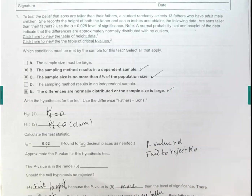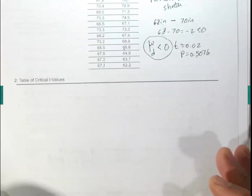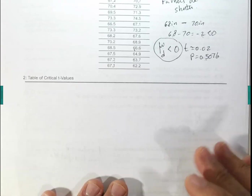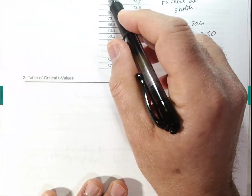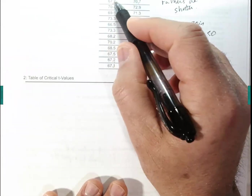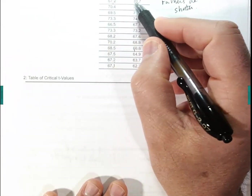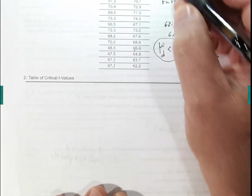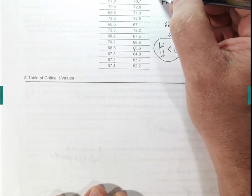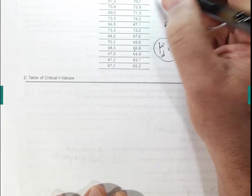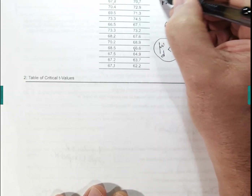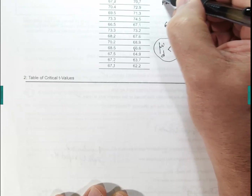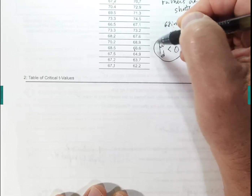We need to test that sons are taller than their fathers. When two samples are dependent, you don't do a two-sample t-test — you do a t-test on one sample, which is the differences. So you have to compute the differences: for example, 71.2 minus 76.3, and so on.